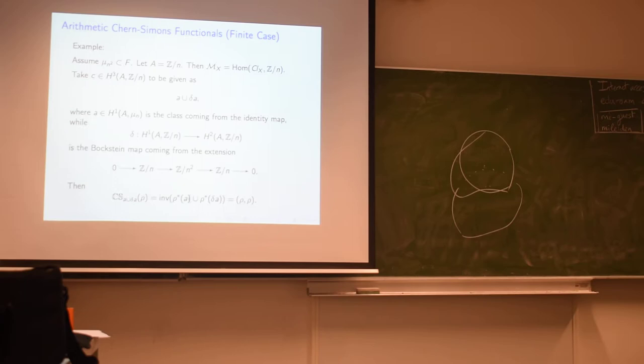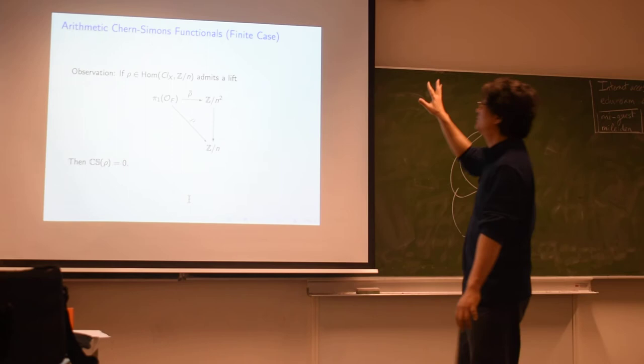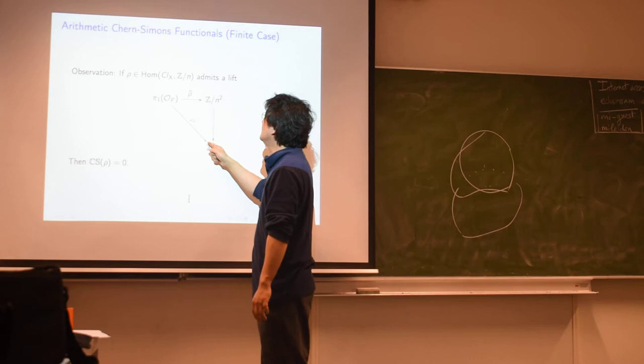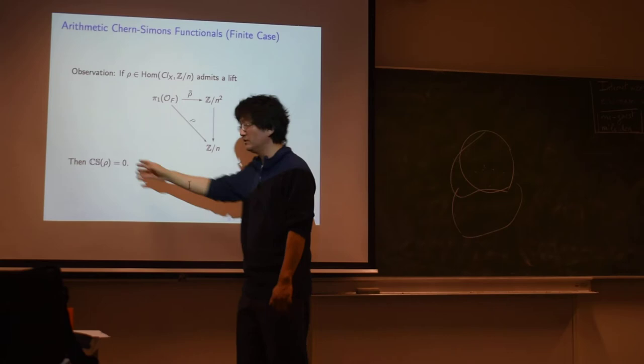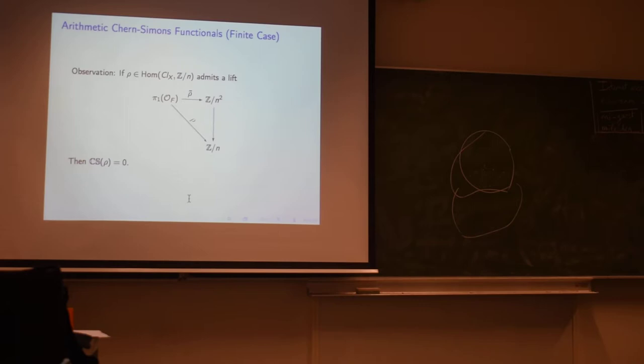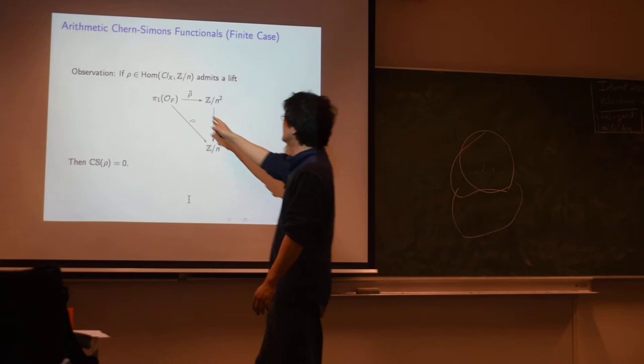So let me make one trivial observation, which is really very trivial but still interesting in this regard. Notice that if you take a representation and suppose this homomorphism to ℤ/n lifts to ℤ/n², that just by definition of the previous trans-Chern-Simons invariant, then the trans-Chern-Simons invariant will be zero. So there's a kind of curious, here at this point, trivial analogy between the kinds of things you expect with L-functions as well. Existence of certain extensions being correlated with vanishing.